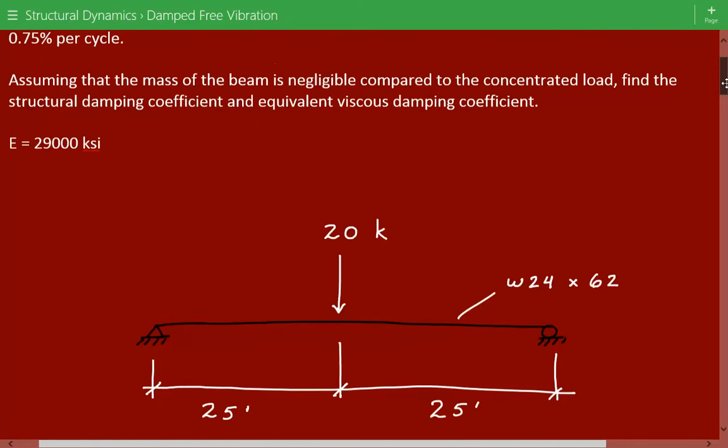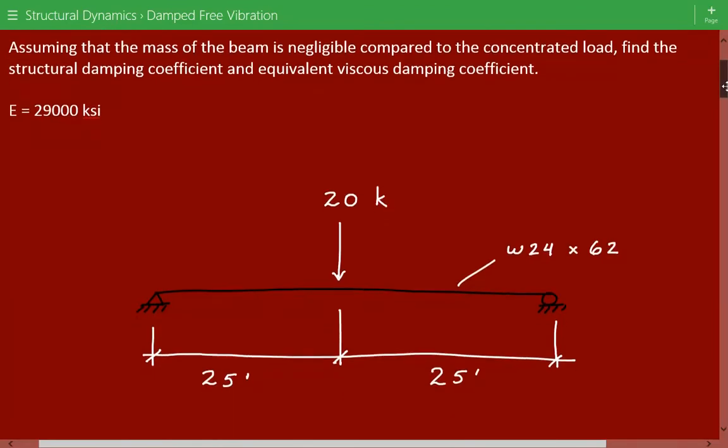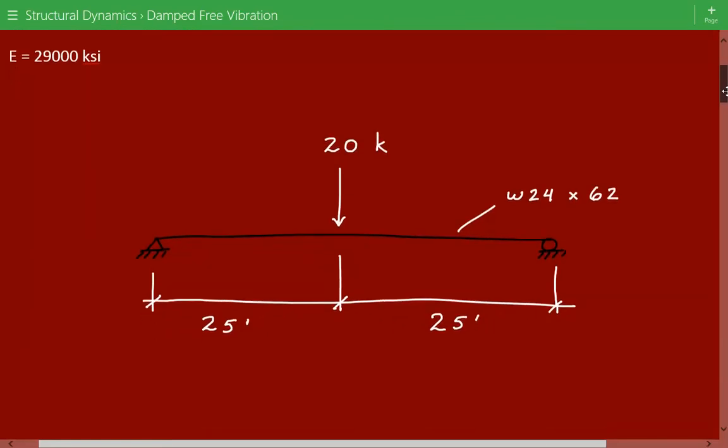And Young's modulus E is equal to 29,000 ksi. So here's our simply supported steel beam. It's 50 feet long and it has a concentrated load of 20 kip at its center, and we call the load 20 kips equal to W.